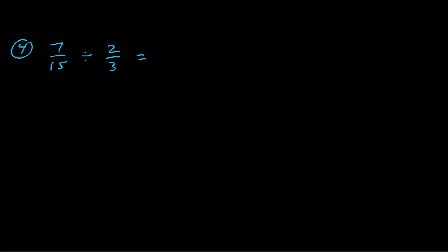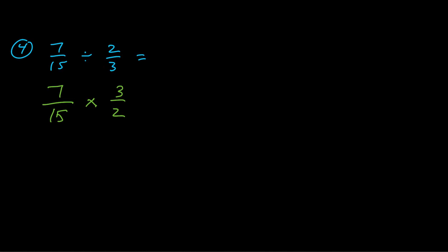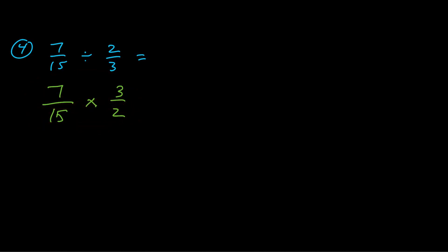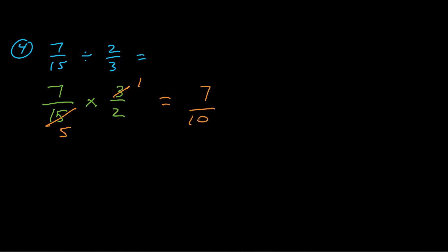For number four we're switching to division. Remember: keep it, change it, flip it. You keep the first fraction, change the division sign to multiplication, and take the reciprocal of the second fraction — flip it over. Then it becomes a multiplication problem. I like to look for cross-reducing: three and fifteen both have a three in common, so three goes into three once and into fifteen five times. Multiplying across: seven times one is seven, five times two is ten, giving us seven tenths already reduced.